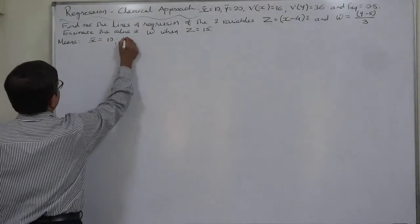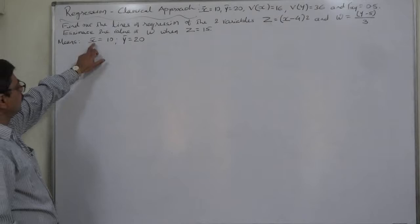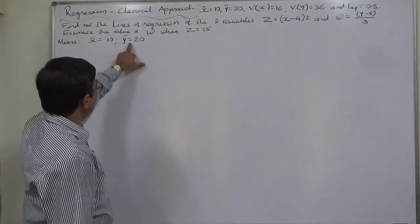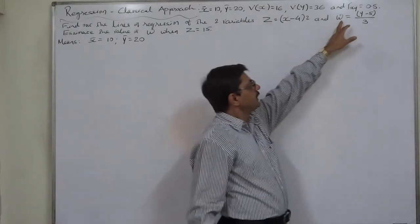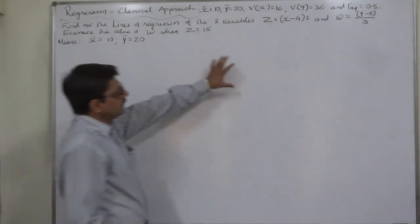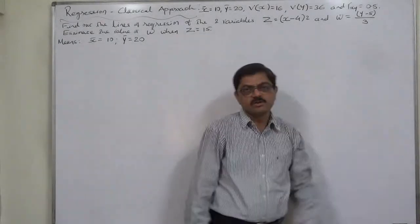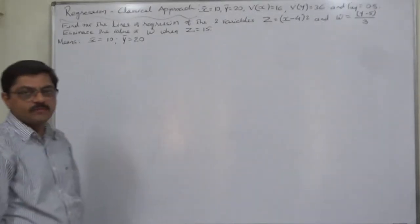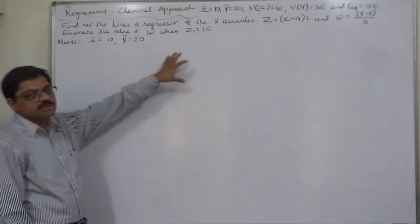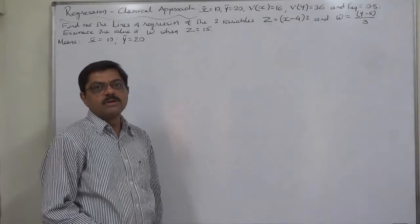X-bar equals 10, Y-bar equals 20. On the basis of X-bar, we need to find out the mean of Z (Z-bar), and on the basis of Y-bar, we can find out the mean of W (W-bar). Since Z is the result of change of origin and scale in X, and W is the result of change of origin and scale in Y, we should keep the property of mean relevant to change of scale and origin in mind.